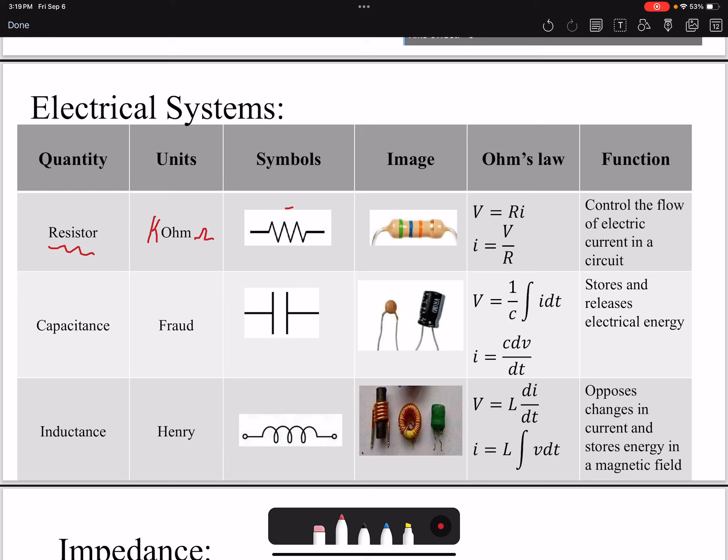That's a symbol we use, that's an image of a resistor. You can see it's color coded, so based on these colors you would be able to find out what would be the magnitude of that resistance. Now we have Ohm's law: voltage equals resistance times current. The functionality of resistor is controls the flow of electrical current. The higher the resistance, the lower current you're going to have and vice versa.